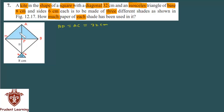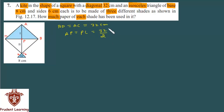Since diagonals bisect each other in a square, AP equals PC. The entire AC is 32 cm, so AP = 32 ÷ 2 = 16 cm. The length AP is 16 cm, and likewise PC is also 16 cm.